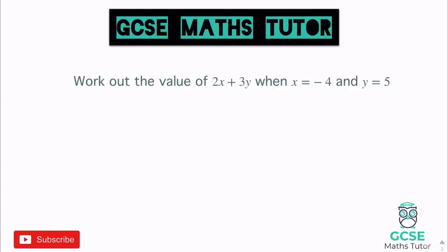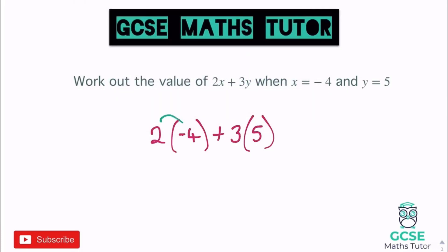Let's look at another one: work out the value of 2x + 3y when x is negative 4 and y is 5. This is where writing brackets really starts to help. So we have 2 lots of negative 4, add 3 lots of 5. Getting rid of the brackets: 2 lots of minus 4 is minus 8, and 3 lots of 5 is 15.